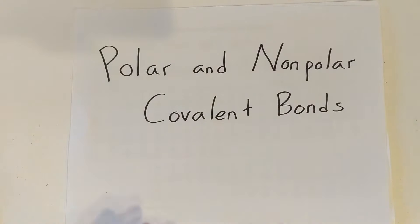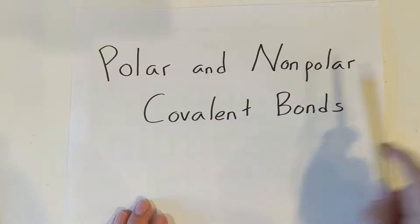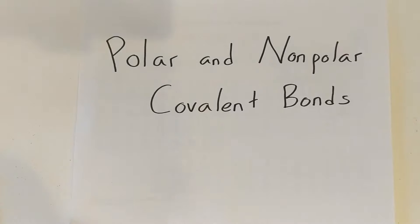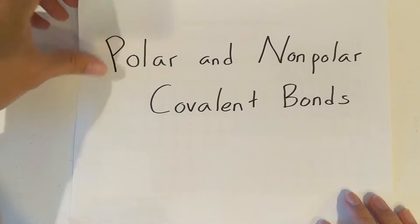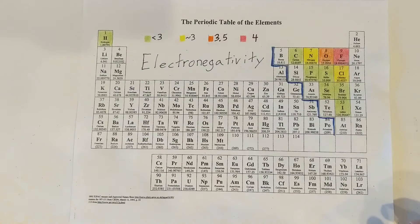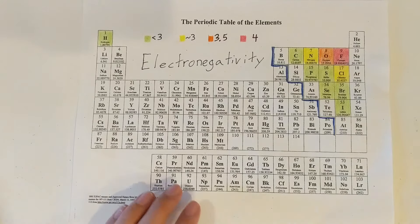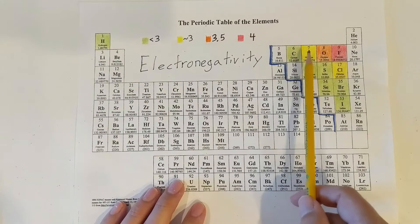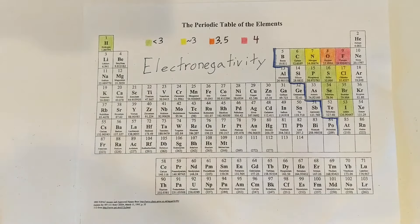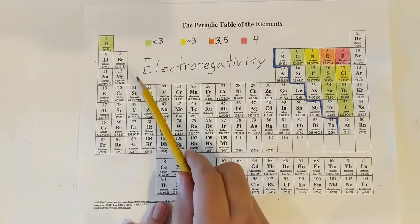Hello class. Today we're going to be learning about what polar and nonpolar covalent bonds are — just specific types of covalent bonds. We learned about covalent bonds last week and what elements form them, which will be our nonmetals. So on this periodic table, you can see I colored all of our nonmetals that form covalent bonds, and I gave them a color coding based on their electronegativity.